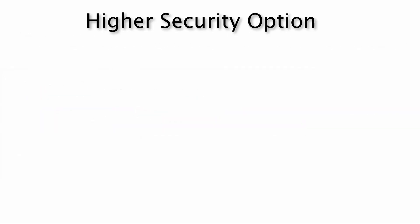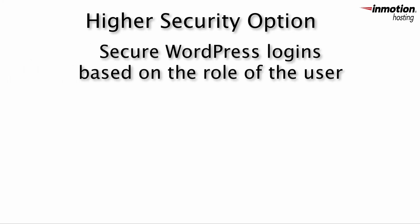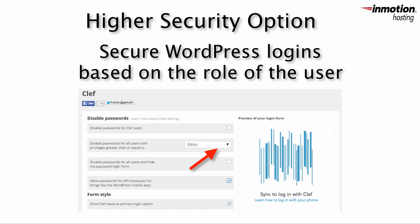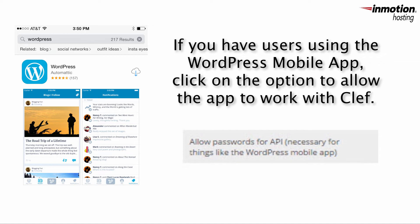The second level of configuration that you can use with Clef is called the higher security option. Here you can specify a certain WordPress role to use Clef to log in. This will allow you to set aside a user group like editors or administrators and force them to use the Clef app to log in. This option can also be used with allow passwords for API, which is necessary for things like the WordPress mobile app. If you have users using the WordPress mobile app on something like an iPad or any tablet or your phone, then you want to have this option checked off.